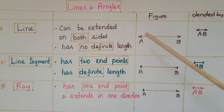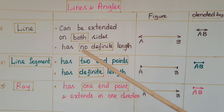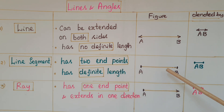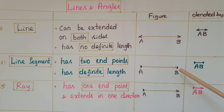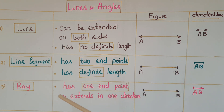Next one is line segment. A line segment has two endpoints, so it has definite length. This is the figure of line segment AB, where A and B are the two endpoints of the line segment.